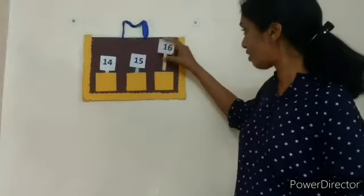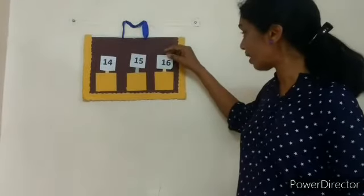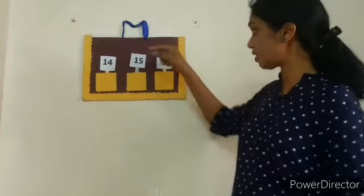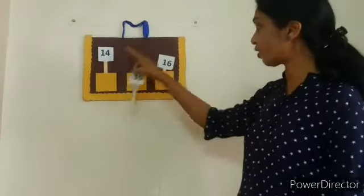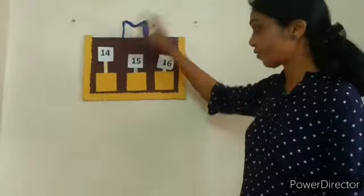And what is the after number of 15? That is 16. So I will put 16 number in the last pocket. Now see, 15 is the between number.